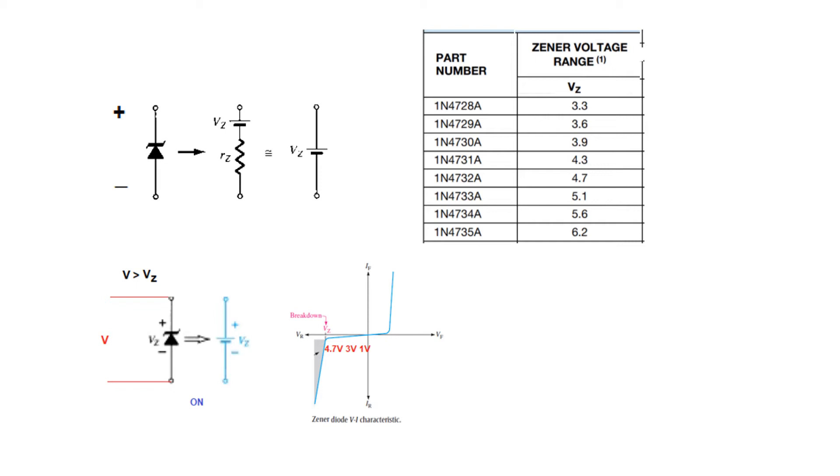So the moment we apply 4.7 volt this will break down and we call that the diode is on now. And when the diode is on we can replace the diode by a voltage source of 4.7 volt in this case.